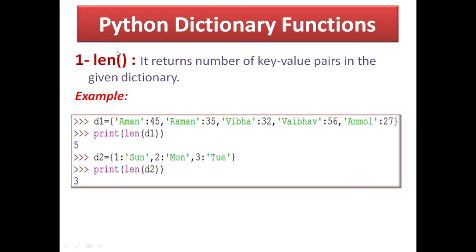The first function is len — as you have used in the case of lists, it returns the number of key-value pairs in a given dictionary. Key-value pairs कितने हैं, उनको return करने के लिए len function का इस्तिमाल करेंगे। मानलीजिए D1 एक dictionary है — Aman: 45, Raman: 35 — these are their ages. उनको आप count कर सकते हैं using len function. len(D1) लिखेंगे, print कर रहे हैं।